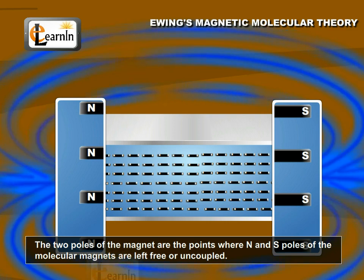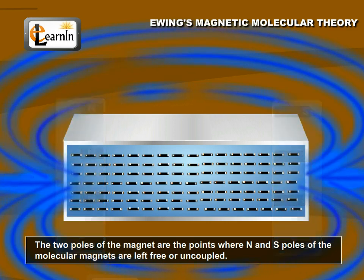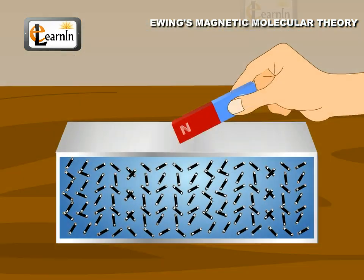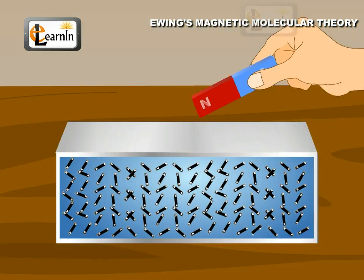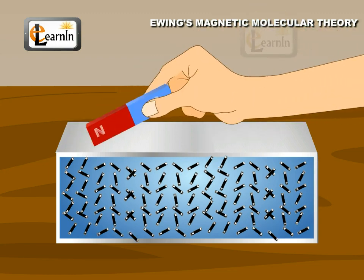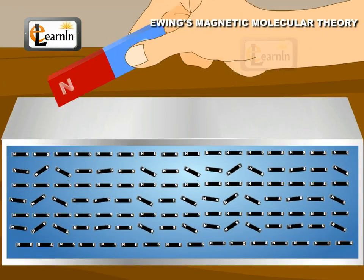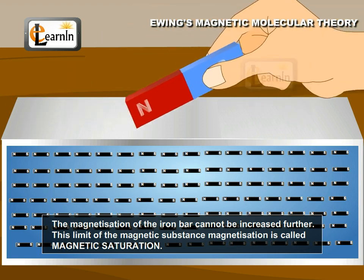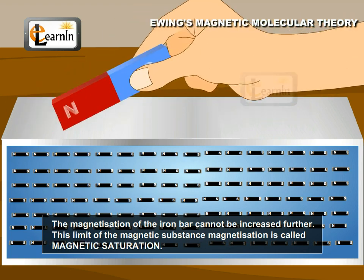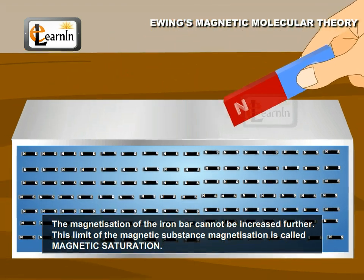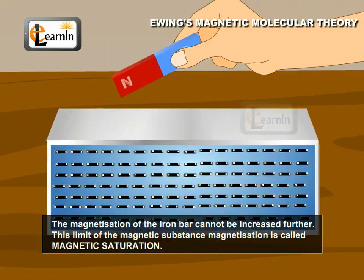In general, perfect ordering of all elementary magnets is not easy to achieve. Only repetition of the process of magnetization allows the maximum alignment among the molecular magnets. This means that the magnetization of the iron bar cannot be increased further. This limit of magnetization of a substance is called magnetic saturation.